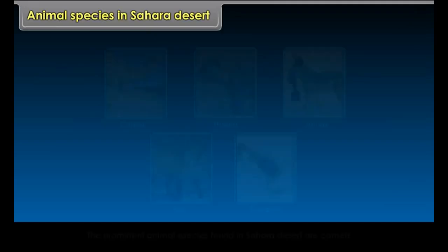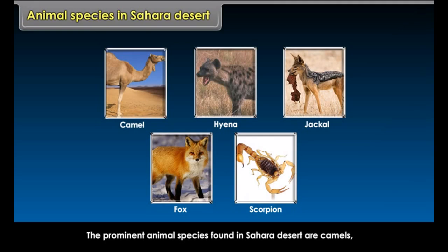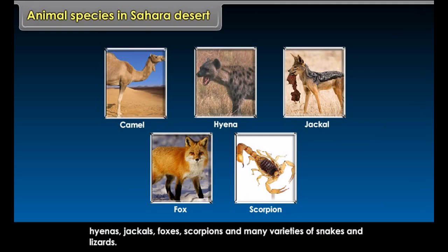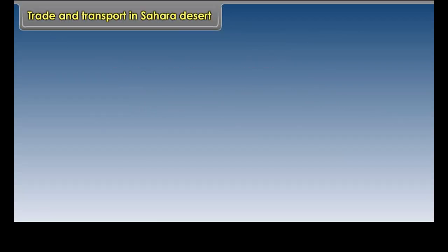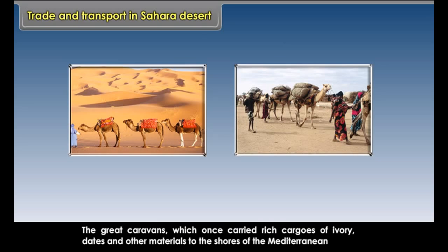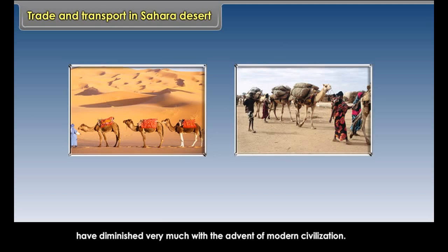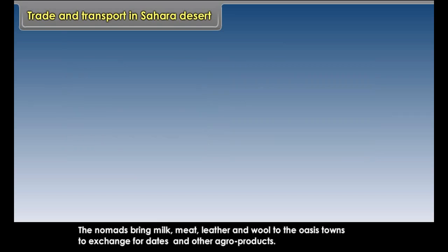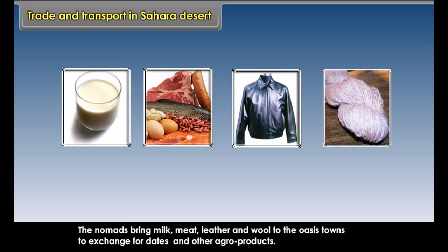The oases are also centers of trade. The people practice farming near the oasis. They grow date palms, cereals and vegetables. The animals provide them with milk, meat and skin, besides serving as means of transportation. The prominent animal species found in the Sahara Desert are camels, hyenas, jackals, foxes, scorpions, and many varieties of snakes and lizards.